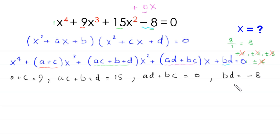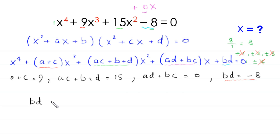And we compare this constant bd with the constant negative 8, so we get bd is equal to negative 8. For this equation bd is equal to negative 8, we have two cases. In case one, we have b times d is equal to 1 times negative 8.